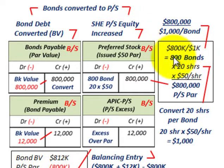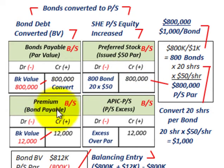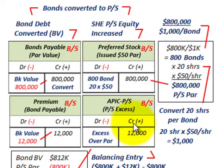Remember, you have to look at your conversion ratio. You need to figure out the number of bonds outstanding — in this case, 800 bonds. You need to know the number of preferred stock shares issued per bond and the par value of the preferred stock per bond, which lets you determine the total par value issued. Then, knowing the book value of the bonds payable, you balance it with preferred stock and the difference flows into additional paid-in capital.